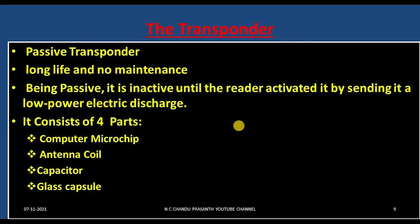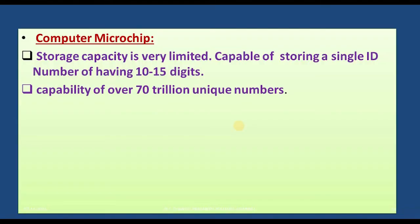The major disadvantage of this biochip is that its storage capacity is very limited. It is capable of storing a single ID number of 10 to 15 digits only. However, each biochip has a unique ID, and the system can generate over 70 trillion unique numbers.